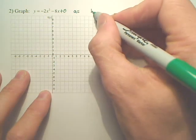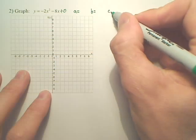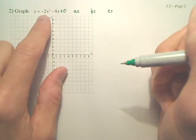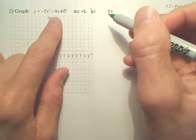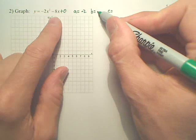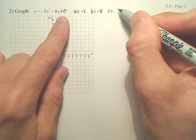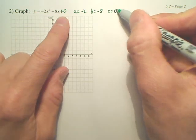Before we start, we need to know our ABCs. Our a is a number in front of x squared, which would be negative two. Our b is a number in front of x, which would be negative eight. And our c is zero.